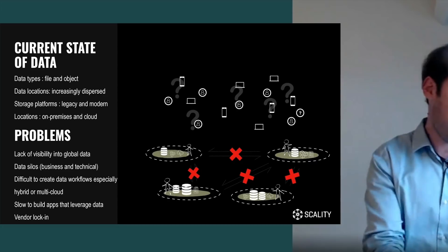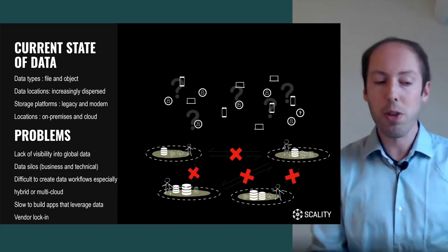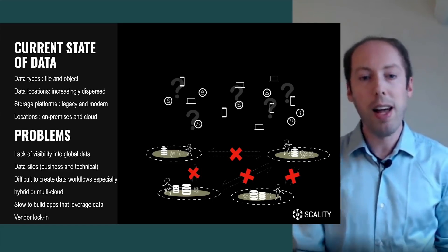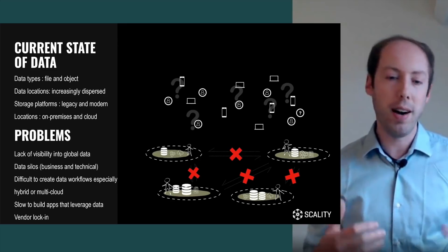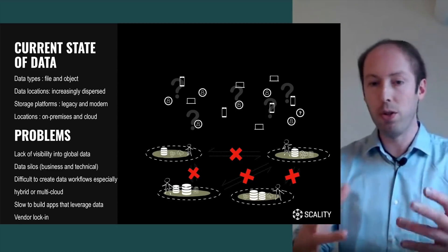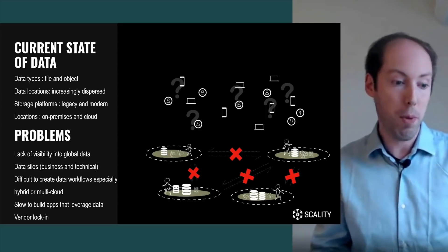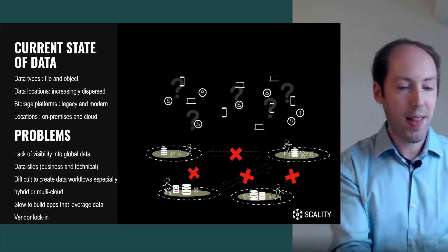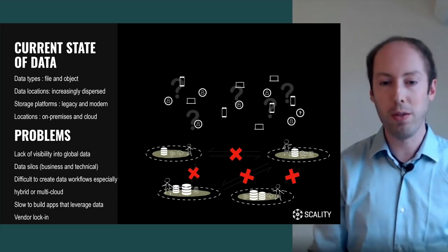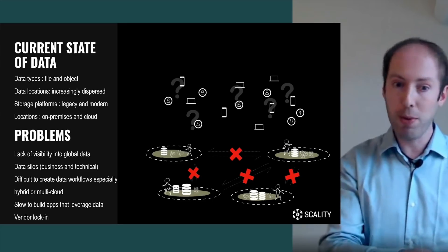What is the current state of affairs — back in 2018, but still the case today? There are multiple types of data: file data, object data, and of course block storage, though that's not really an area where Scality plays. There are many data locations, which can be physical locations — a data center in Asia, Europe, or the US. You have multiple storage platforms, both legacy and modern ones: you may have some SAN or NAS from the early 2000s while also using a modern NVMe-based storage system. And storage can be both on premises as well as in the cloud.